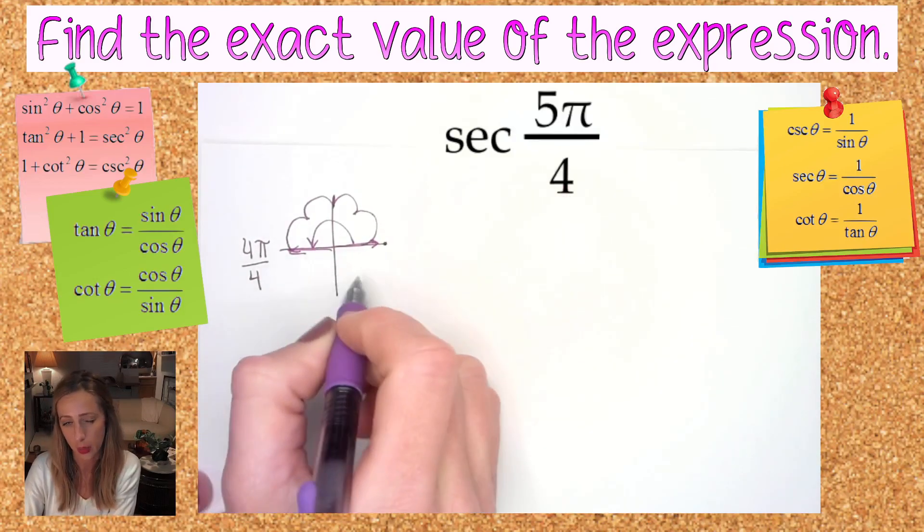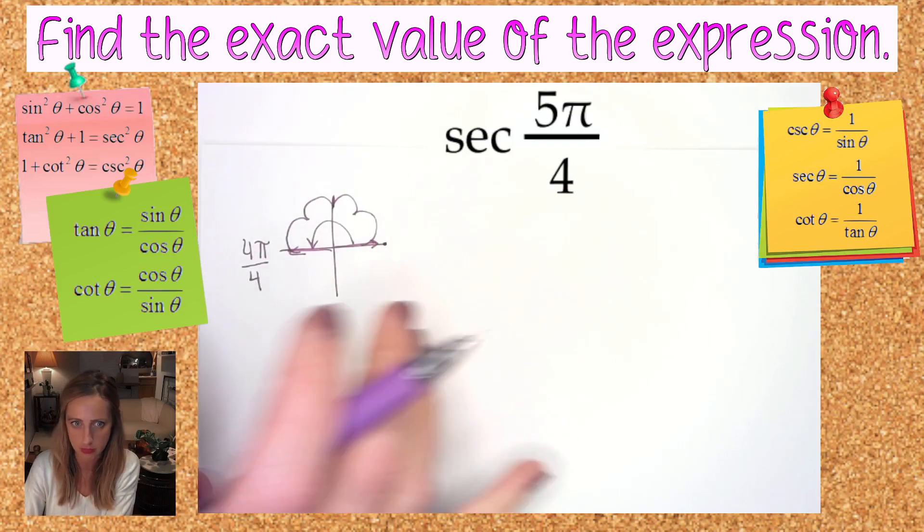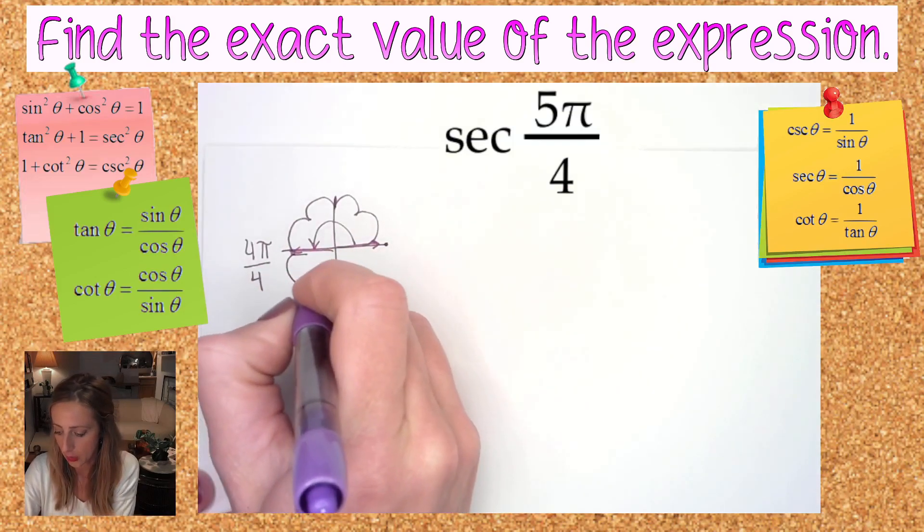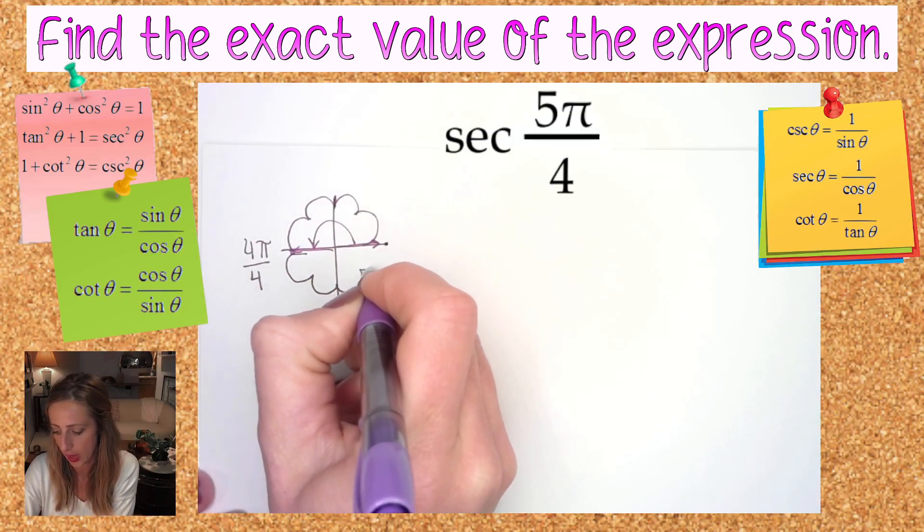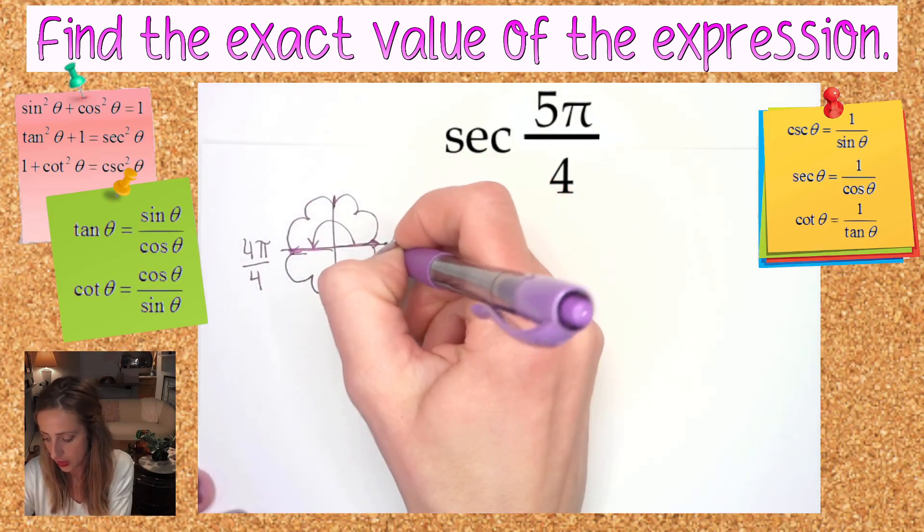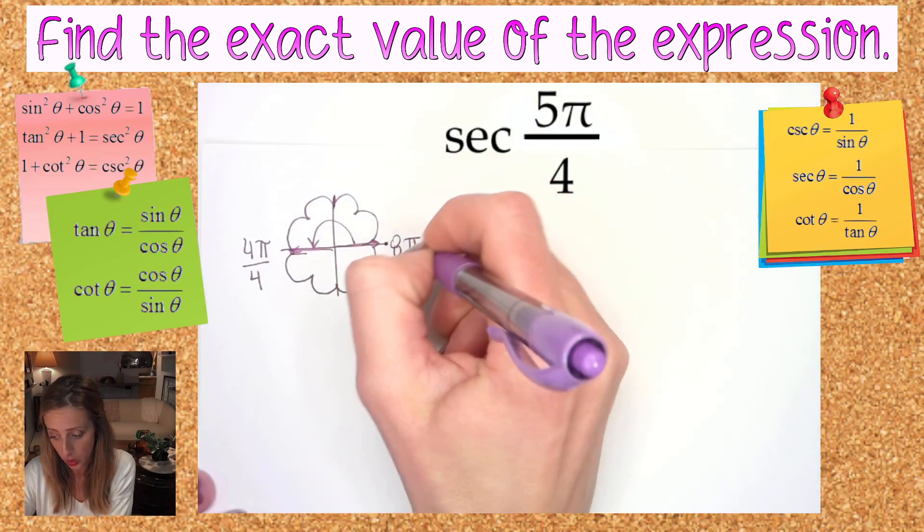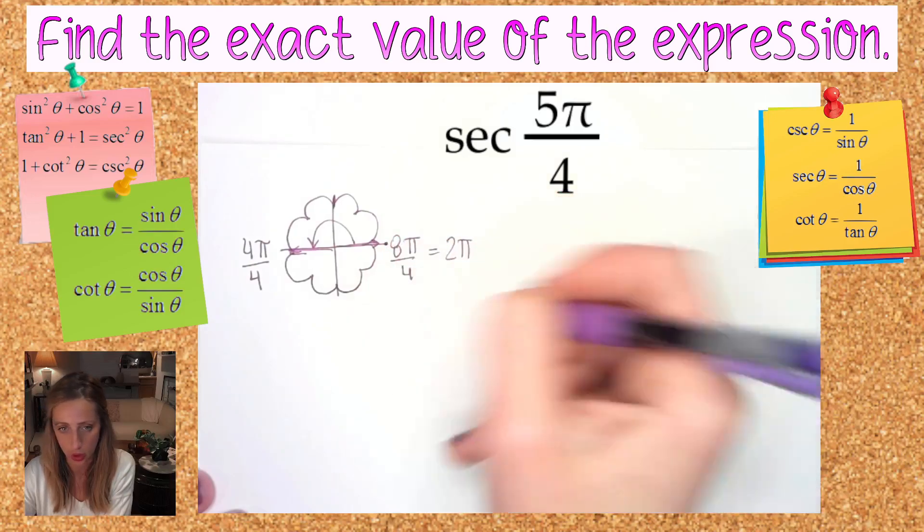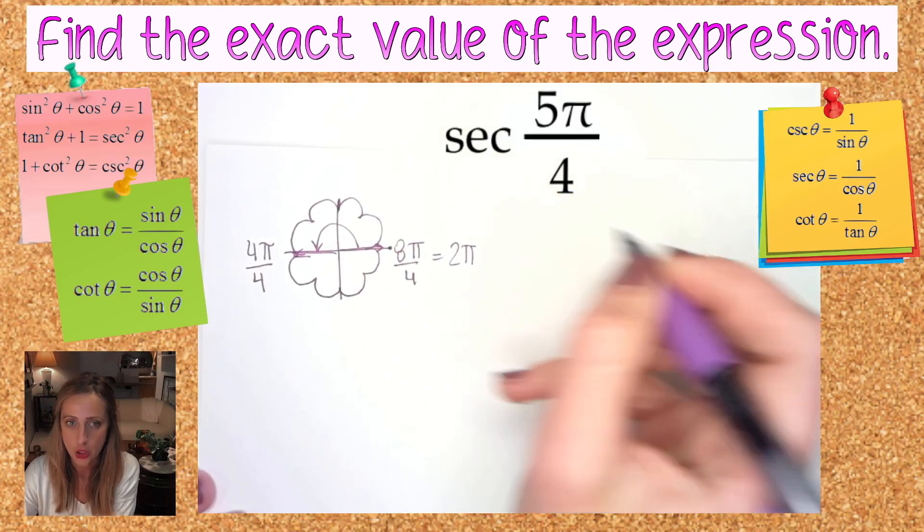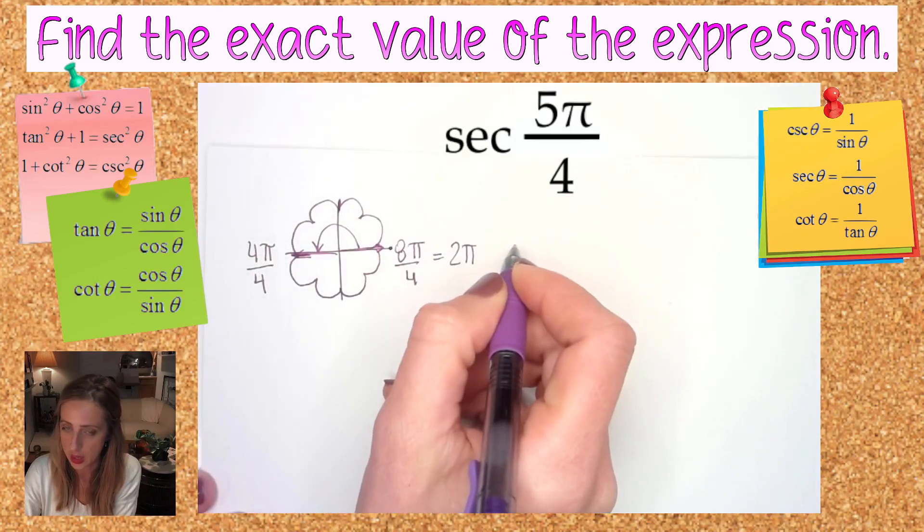If you were to do these little flower petals, you would double your denominator and that's how many flower petals you should have evenly distributed. So I would have eight petals all the way around. That's also why this spot is known as 8π over 4 because that is 2π, a full loop around.